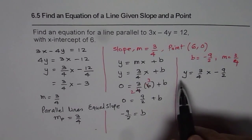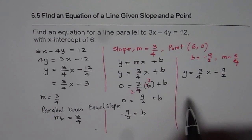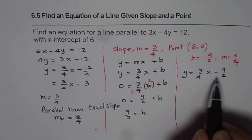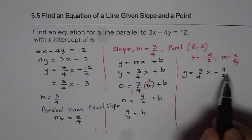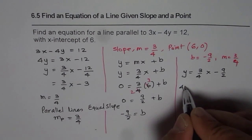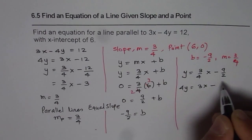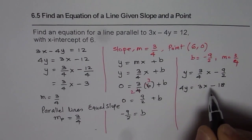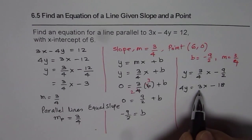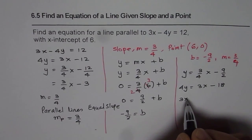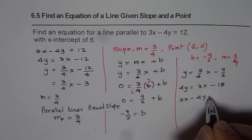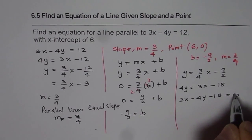At times, you may be asked to write this equation in standard form. In that case, get rid of fractions, multiply everything by 4 in this case. Let me do that part also. So 4y, 3x minus 18. And bring all terms together, keeping coefficient for x positive. So we get 3x minus 4y minus 18 equals to 0.